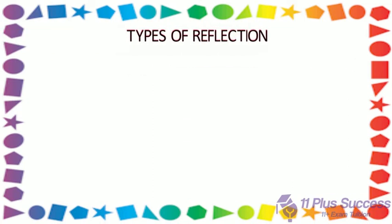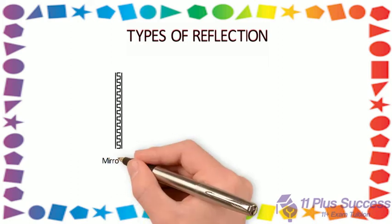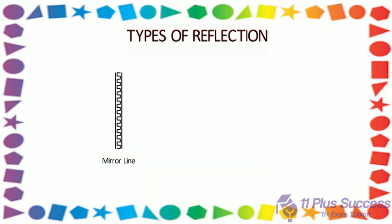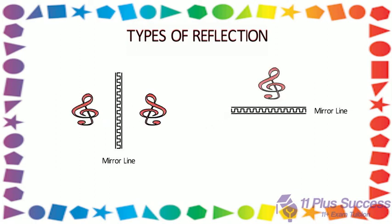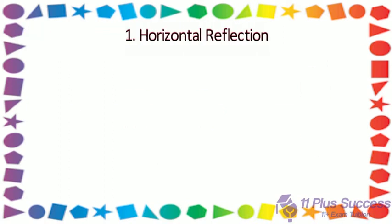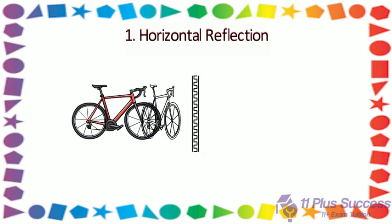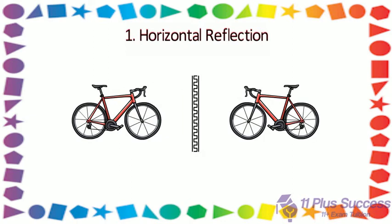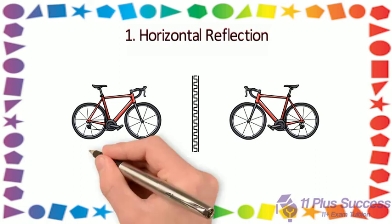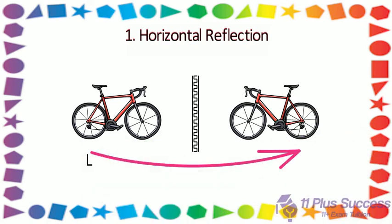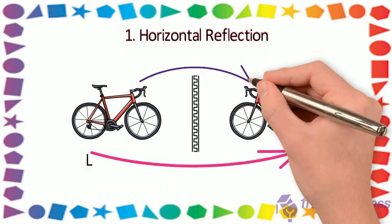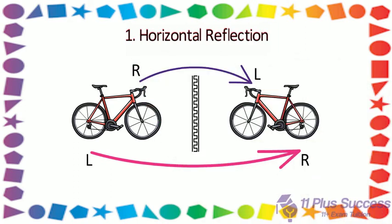Types of reflection. The mirror line, or line of reflection, can be in any direction. You just need to reflect the object or shape on one side through to the other side. 1. Horizontal reflection: an object is flipped over horizontally to make a horizontal reflection, and in a horizontal flip or reflection, the left side becomes the right side and the right side becomes the left side.